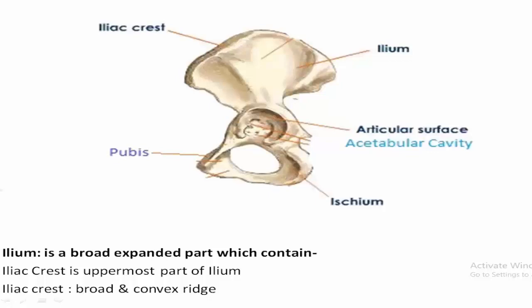The broad expanded part — ilium — faces upward, and the iliac crest is in the uppermost part of the ilium. It is a broad convex ridge. In this video we are only discussing about the iliac crest, because it has different parts and different muscle attachments.